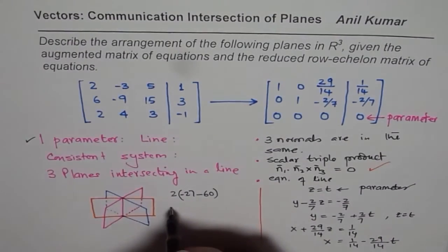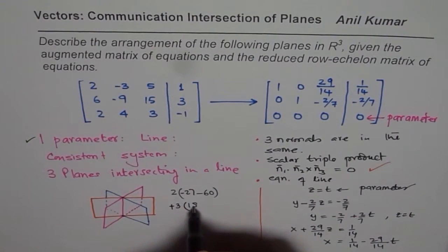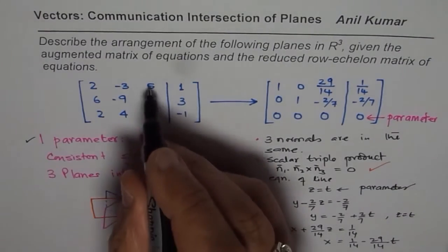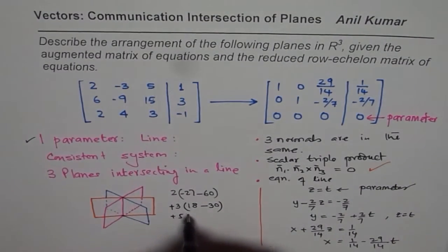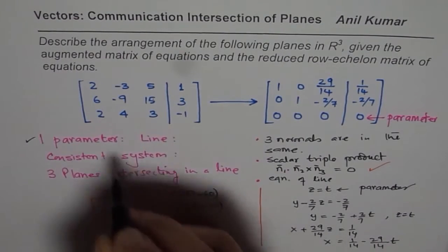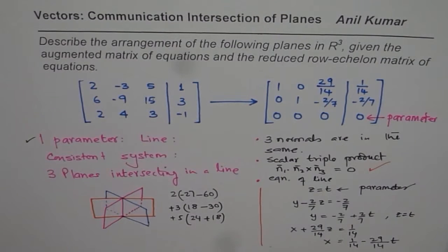Then minus of -3 becomes plus 3. 6 times 3 is 18, minus 30. Then we have plus 5 times 6 times 4, which is 24, minus of -18 makes it plus.